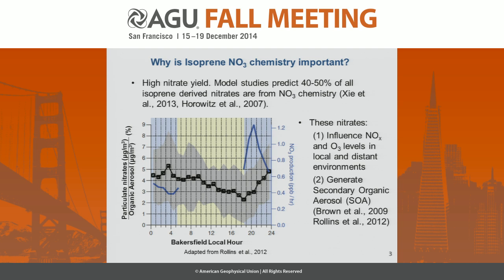This chemistry is important to study because it has a very high nitrate yield. Model studies predict that 40 to 50 percent of all isoprene-derived nitrates are from NO3 chemistry, and these nitrates influence both NOx and ozone levels in local and distant environments, and also generate secondary organic aerosol. The Rollins 2012 study looked at NO3 chemistry generally, and they saw that particulate nitrates and organic aerosol increased at night, indicating that nitrates from NO3 chemistry are going into the particle phase. Understanding the exact gas-phase chemistry is necessary to understand what's going into the aerosol.